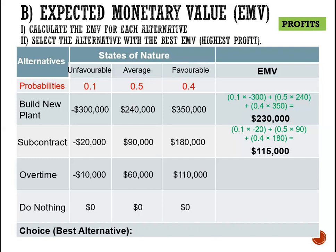For overtime, we have 0.1 × (−10,000) + 0.5 × 60,000 + 0.4 × 110,000, which gives an expected profit of $73,000. For do nothing, we could calculate 0.1 × 0 + 0.5 × 0 + 0.4 × 0, which of course gives us 0.